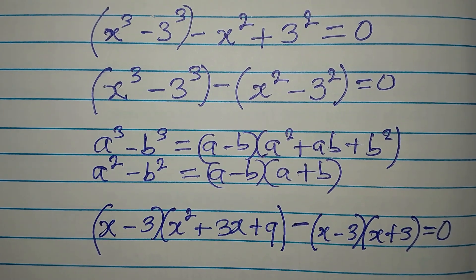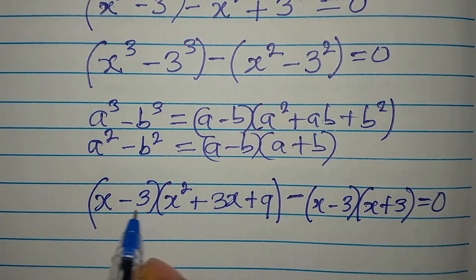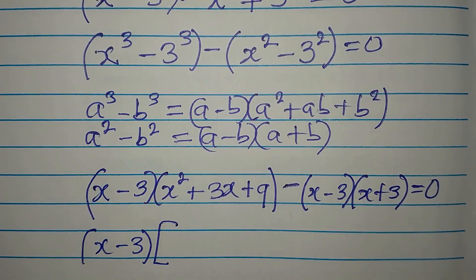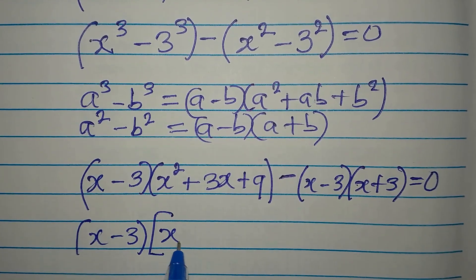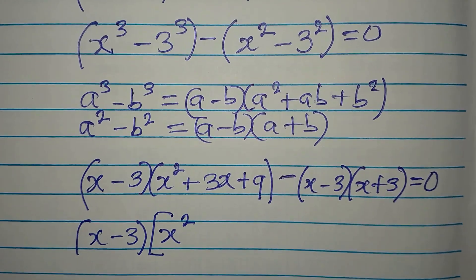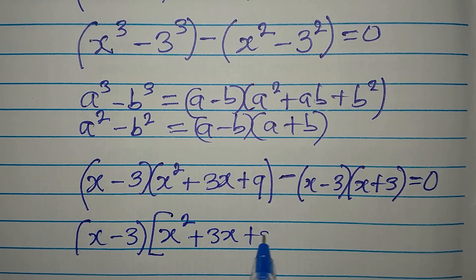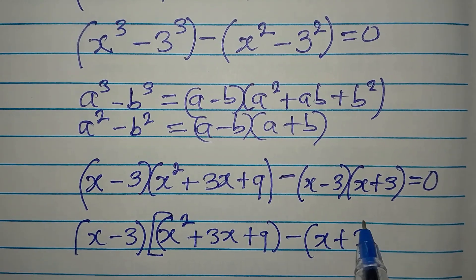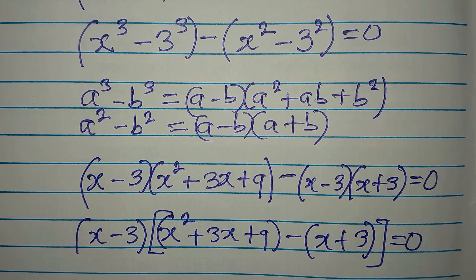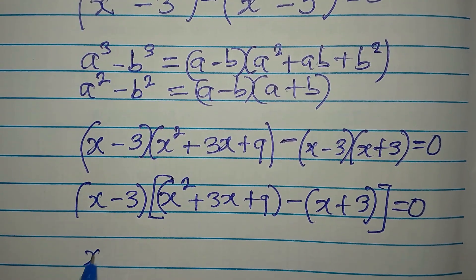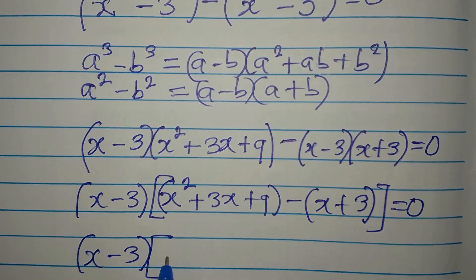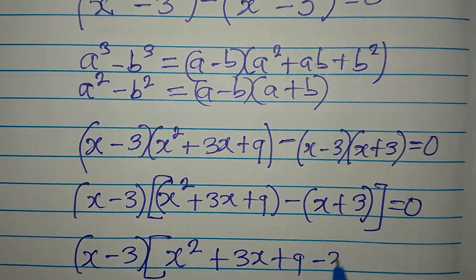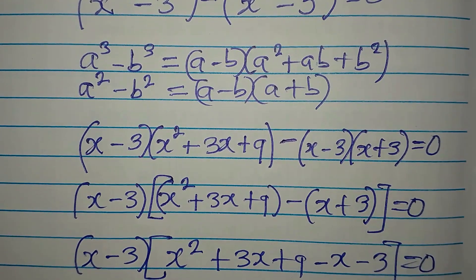Everything equals zero. Looking at both terms, x minus 3 appears in both, so it comes out as a common factor. We get x minus 3 times the quantity x squared plus 3x plus 9 minus x plus 3, equals zero. Opening that bracket gives x minus 3 times x squared plus 3x plus 9 minus x minus 3, equals zero.